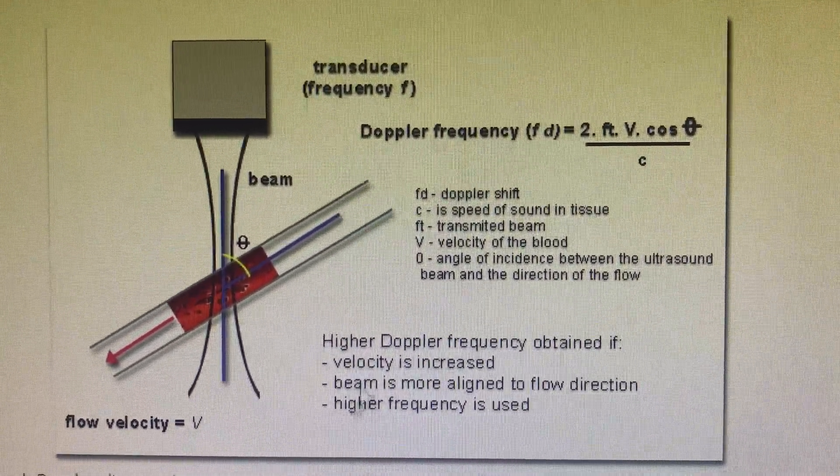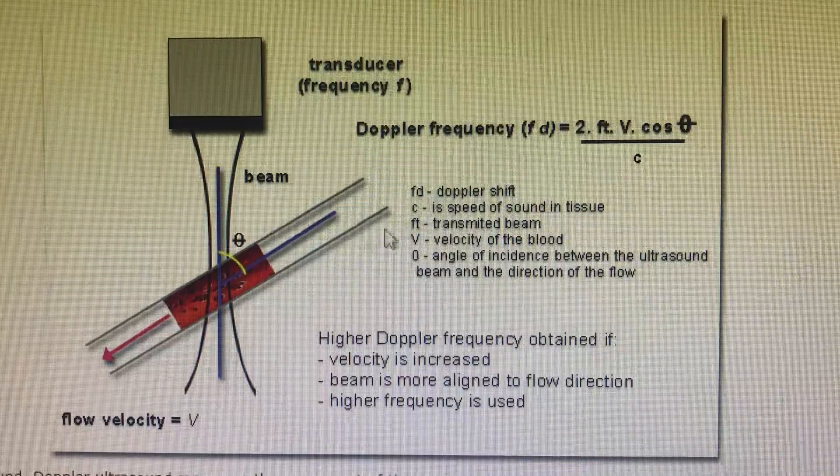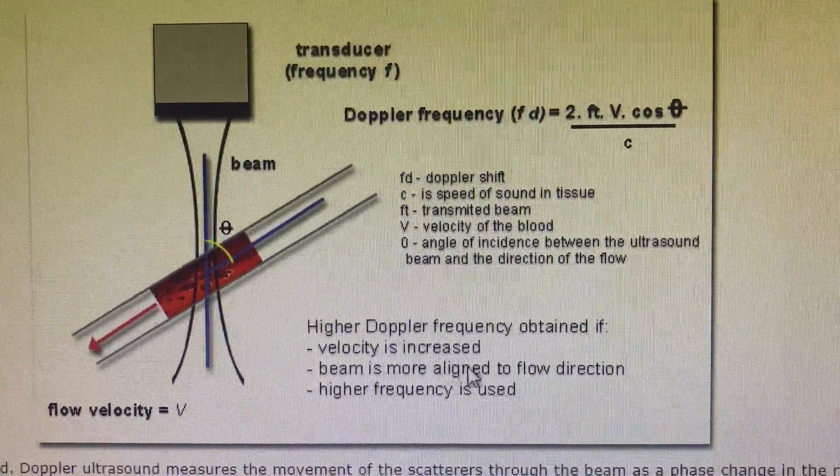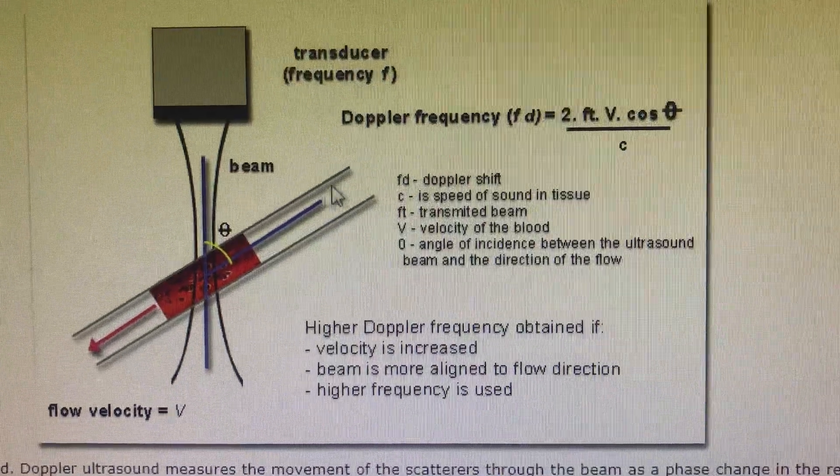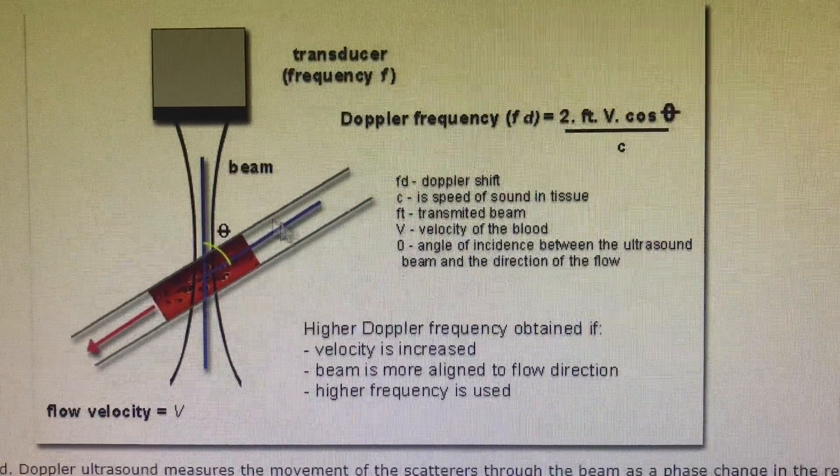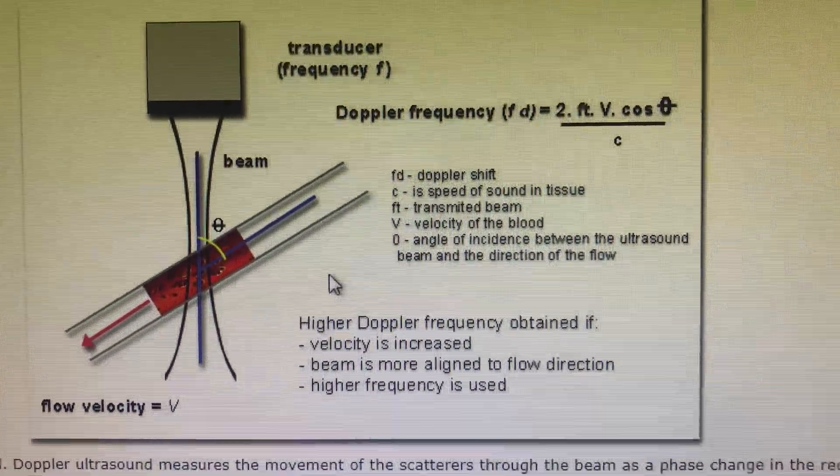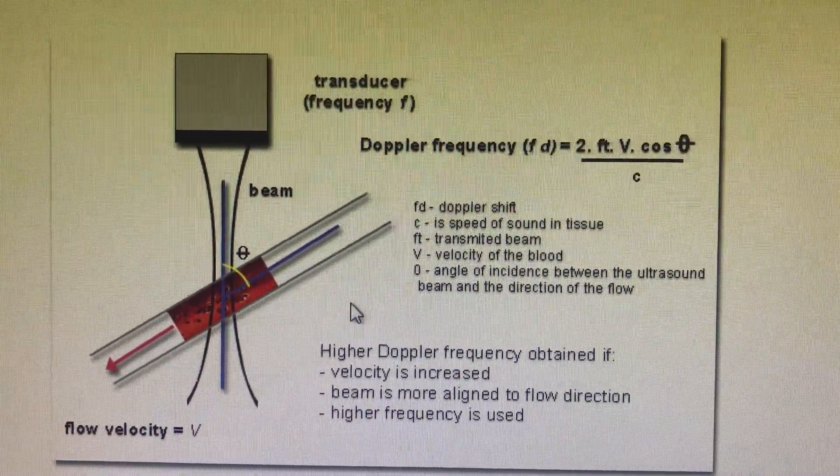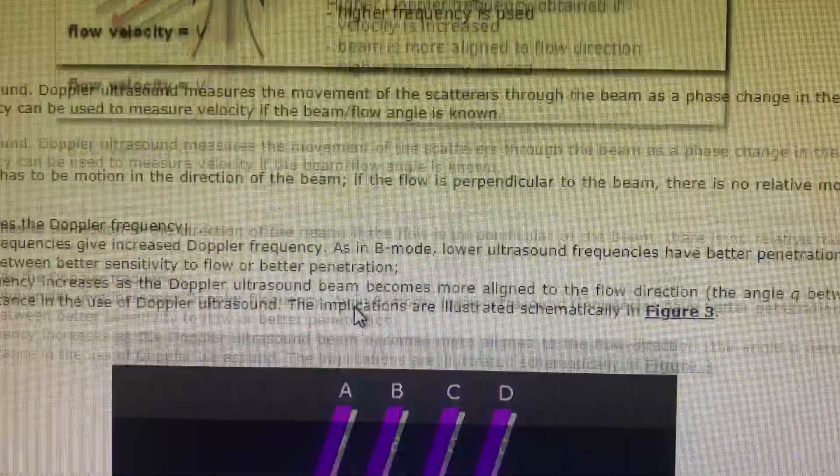If the blood flow is very high, then the frequency is very high - the Doppler effect is very high. If the beam is more aligned, in parallel line with the blood flow, then most probably the frequency is very high. These two things will result in a very high Doppler frequency.